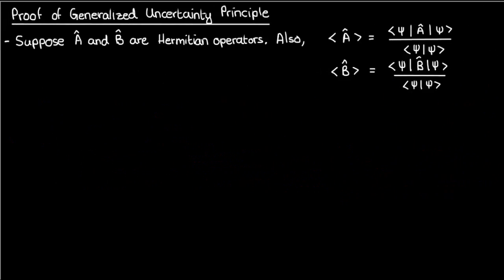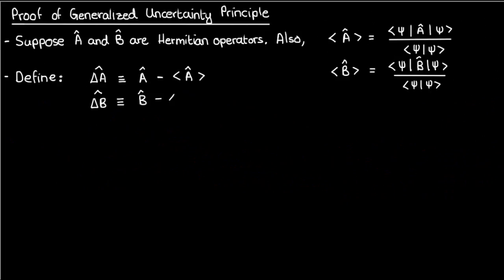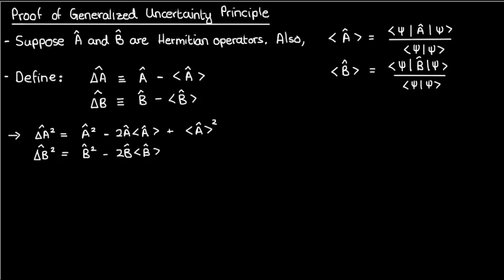Let's get back to the proof. We'll begin by defining two new operators, Δâ and Δb̂, which are simply the deviation of the operators â and b̂ from their respective expectation values. Let's square these two delta operators, and here's what we get.